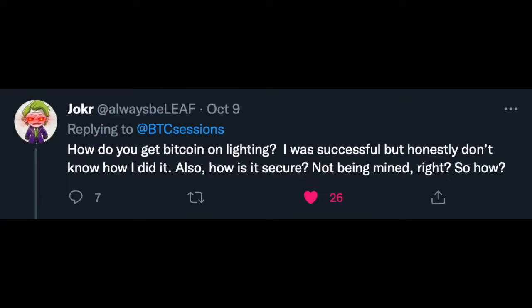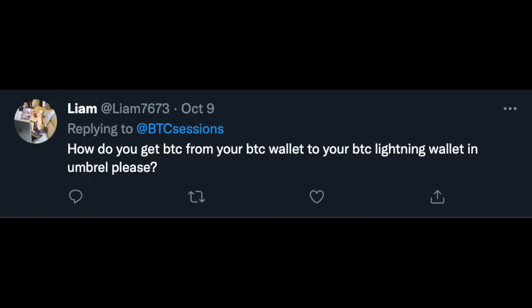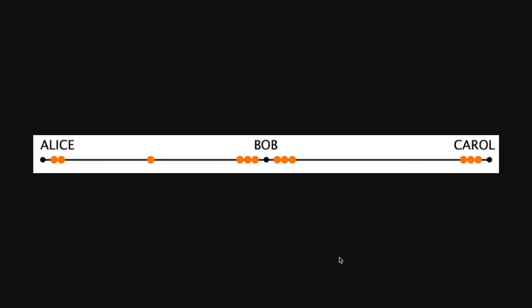This week's question comes from a lot of you and it is: how do I get Bitcoin into a lightning wallet from the main chain? We're going to start off by clarifying that lightning network Bitcoin is indeed real Bitcoin — it is just locked in what are known as channels, which is liquidity between you and another peer. These locked up funds act like an abacus and can bounce between you and the peer, and down the line throughout the network to other peers that may not be directly connected to you.